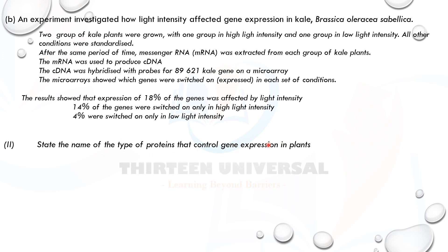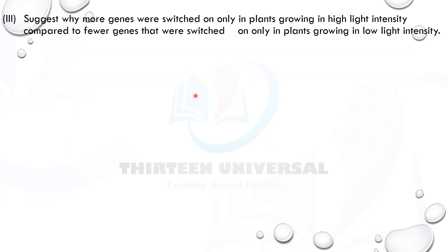What is the name of the type of proteins that control gene expression in plants? They are called transcription factors. Some are repressor proteins — they stop transcription from occurring. Others are activators — they cause transcription to happen. The next question asks: why were more genes switched on only in plants grown in high light intensity compared to fewer genes switched on in low light intensity?